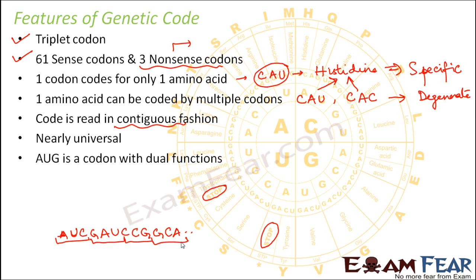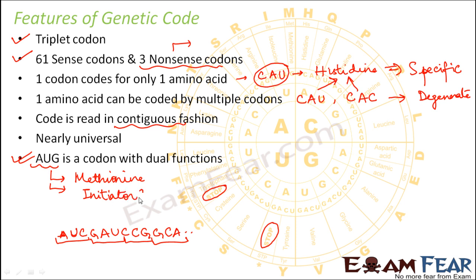AUG is one codon which performs a dual function. First, AUG codes for the amino acid methionine. Second, it also acts as the initiator codon — just as we have stop codons to end translation, we need an initiator codon to begin it, and AUG serves that purpose. These are the important features of the genetic code.